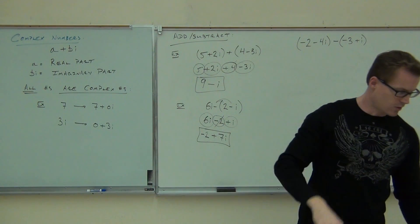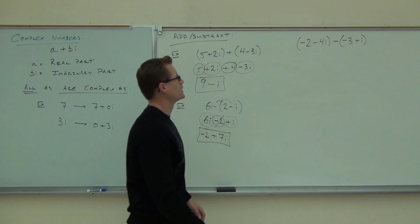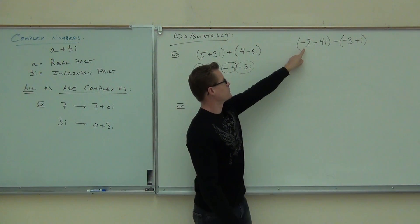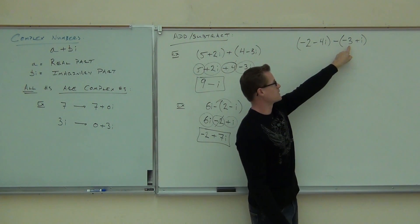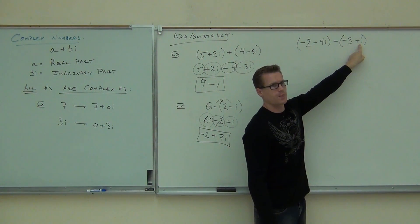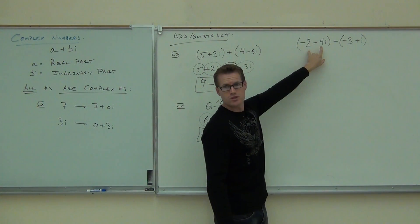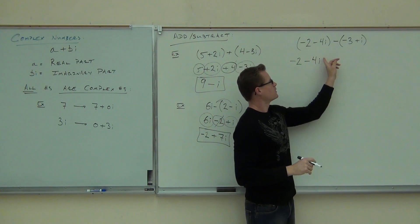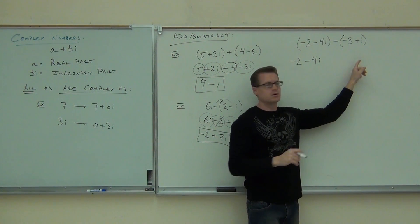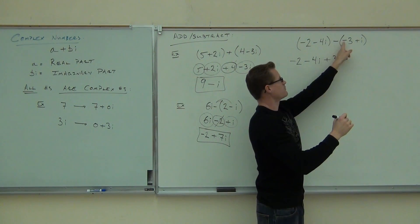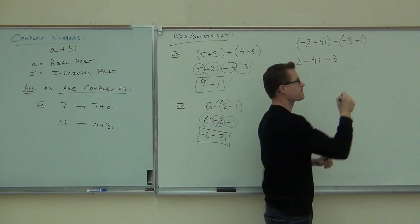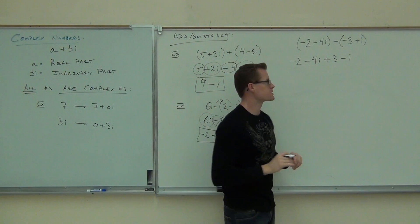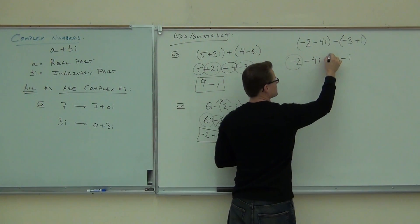Okay, last one we'll do together, then I'll give you 3 to do on your own. Distribute the negative to the second complex number. We have negative 2 as our real part, negative 4i as our imaginary. Negative 3 is our real part, positive 1i is our imaginary part. Are the signs on your first complex number going to change? Someone on the right side of the room — what should I write here? Plus 3. Good. A negative and a negative is positive. And then? Minus. Make sure you distribute those correctly.